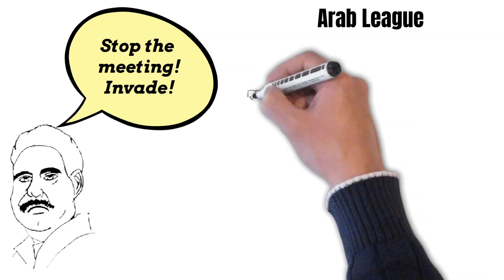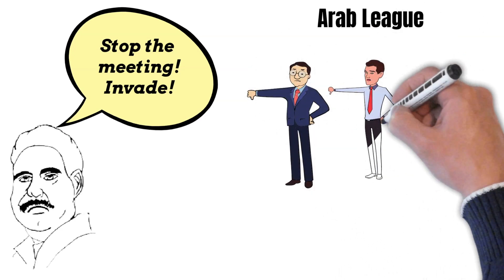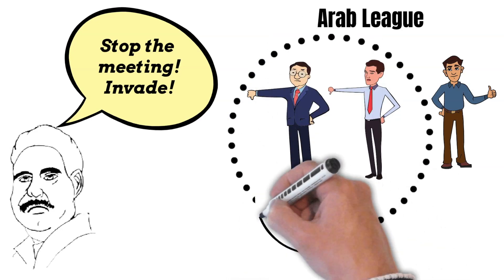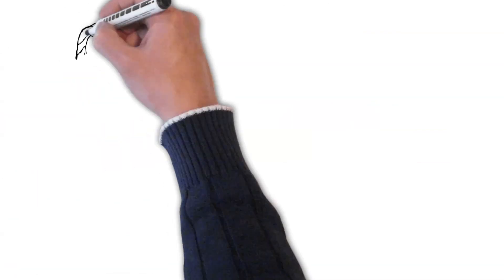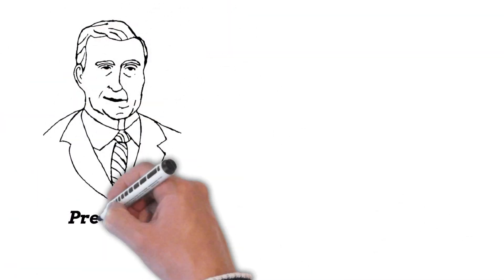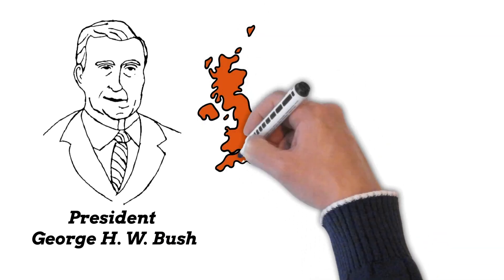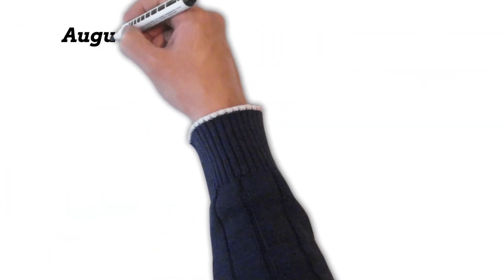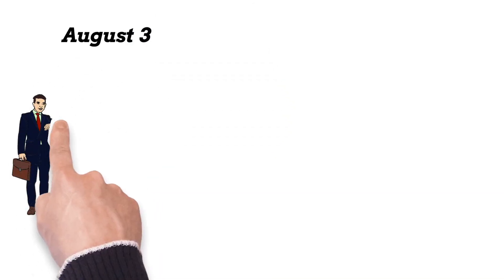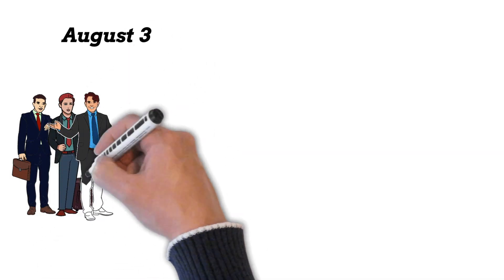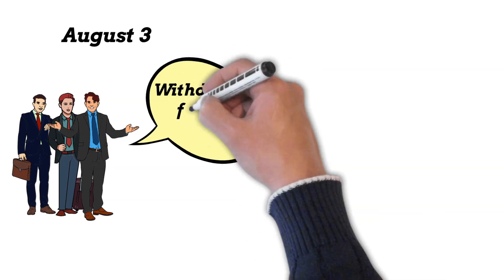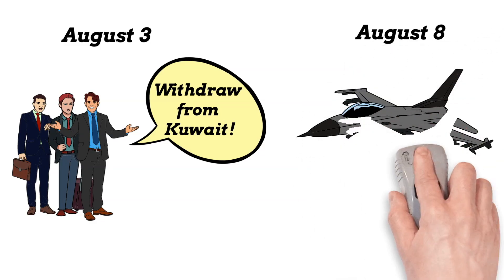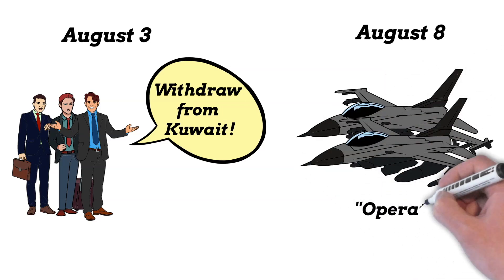Two-thirds of the 21 members of the Arab League condemned Iraq's act of aggression and turned to the United States and other members of NATO — the North Atlantic Treaty Organization — for support. President George H.W. Bush, along with the governments of Britain and the Soviet Union, immediately condemned the invasion. On August 3rd, the United Nations Security Council called for Iraq to withdraw from Kuwait. When they did not, on August 8th, the first U.S. Air Force fighter planes began arriving in Saudi Arabia as part of a military build-up dubbed Operation Desert Shield.